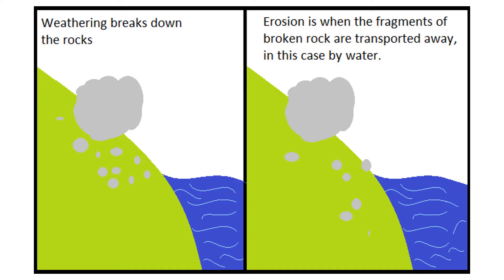Regardless of the cause, weathering is usually followed by erosion, which is the transport of rock fragments away from their place of origin. The main agents of erosion are gravity, wind, flowing water, and ice. Fragments move downhill and may be carried by wind, rivers, or glaciers to other locations.